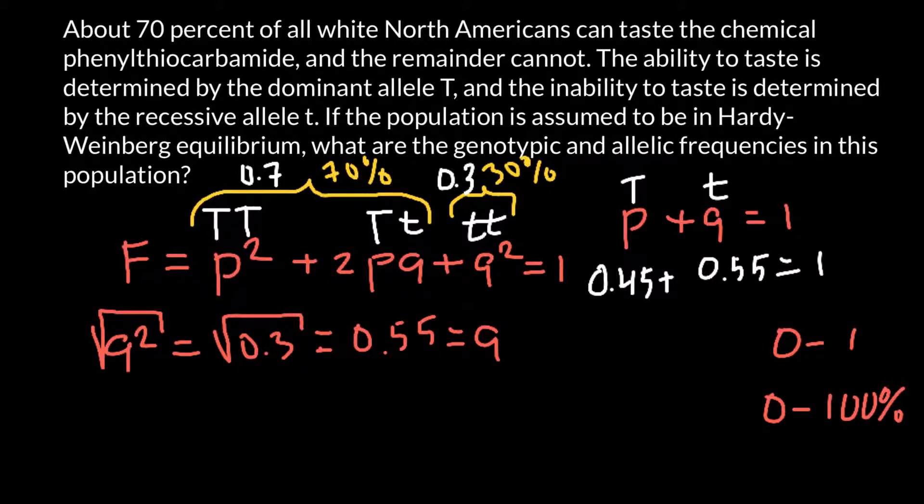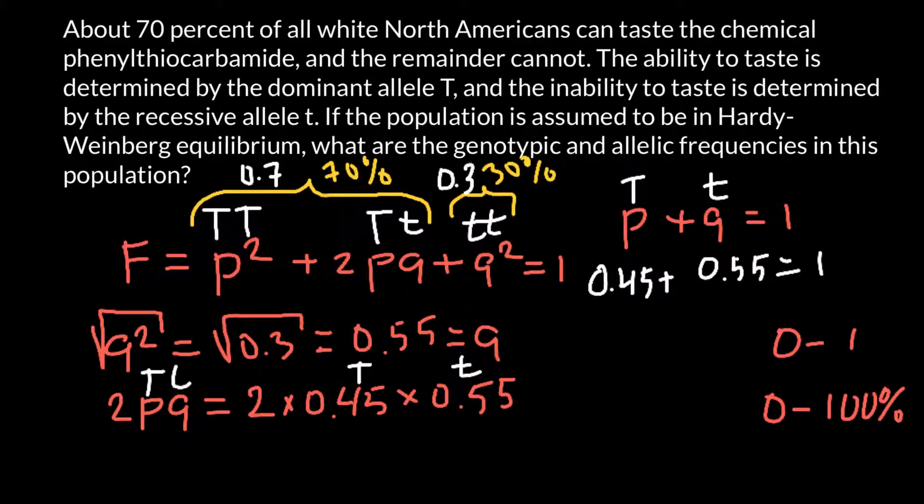Now we can find the frequency of the heterozygous genotype. We have here 2pq, and we have to multiply 2 by 0.45 and by 0.55. This is the frequency of the dominant allele, and this is the frequency of the recessive allele. This is the frequency of the heterozygous genotype, and the rounded answer would be 0.5.